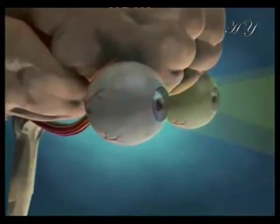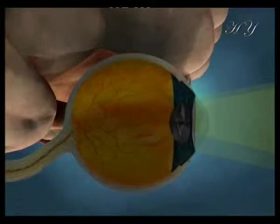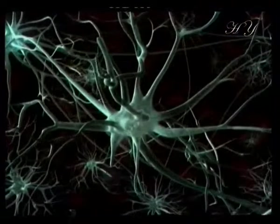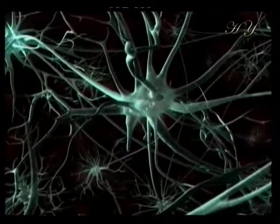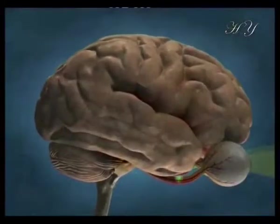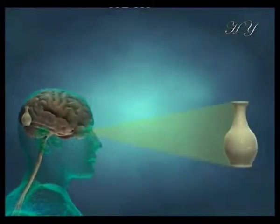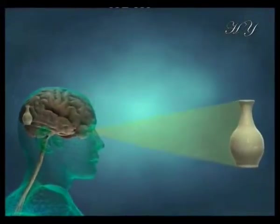The retinal layer at the back of the eyeball contains cells that are sensitive to light. Photons falling on this layer are turned into electrical impulses by the receptor cells there. The optical nerves carry this electrical current to the visual center at the rear of the brain, which interprets the current and gives rise to images.